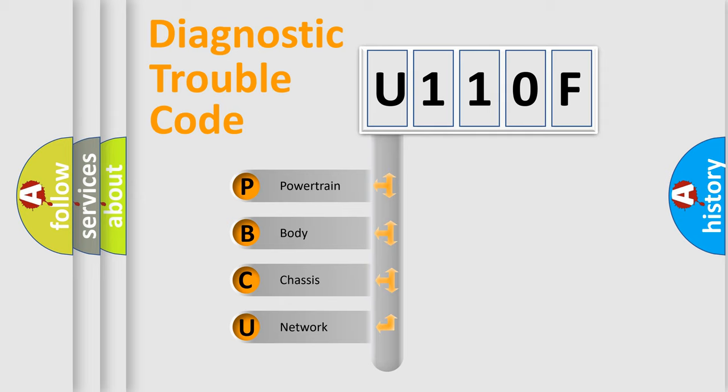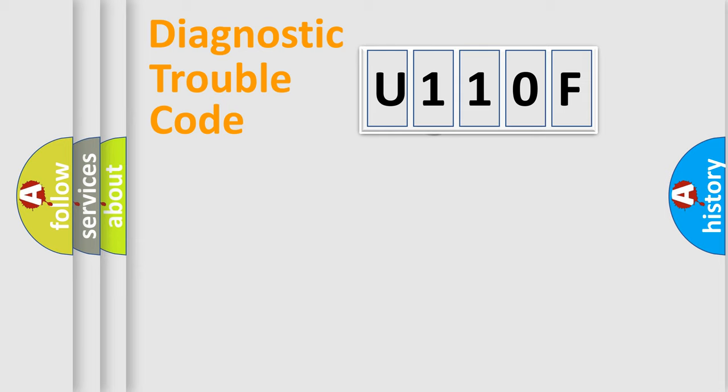We divide the electric system of automobiles into four basic units: powertrain, body, chassis, and network. This distribution is defined in the first character code.